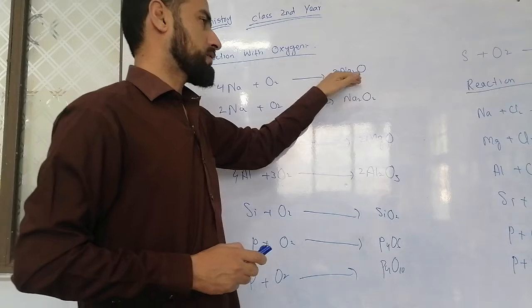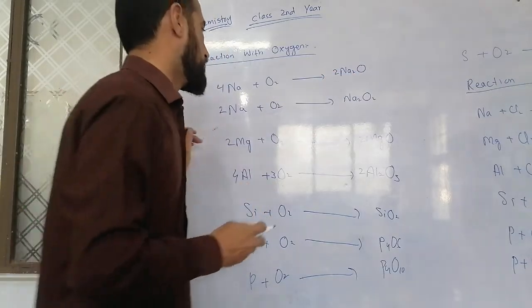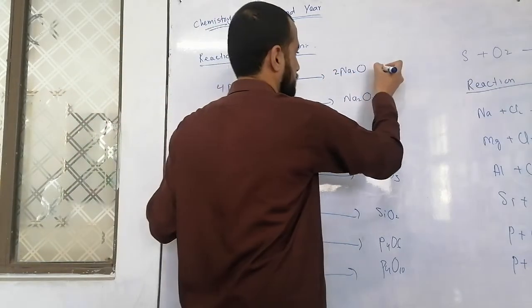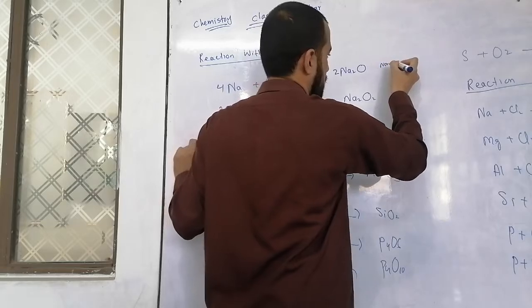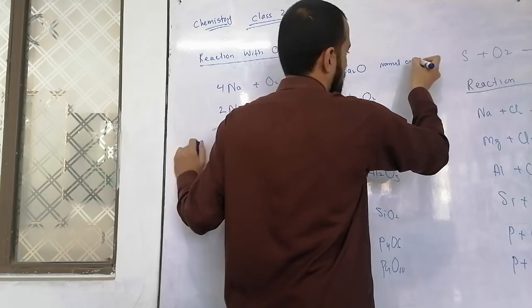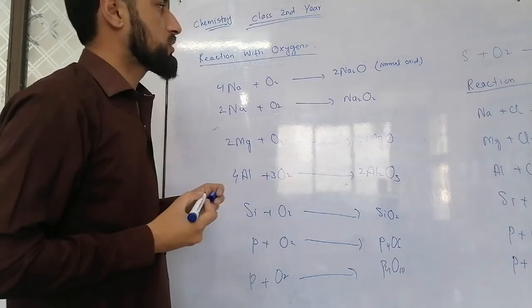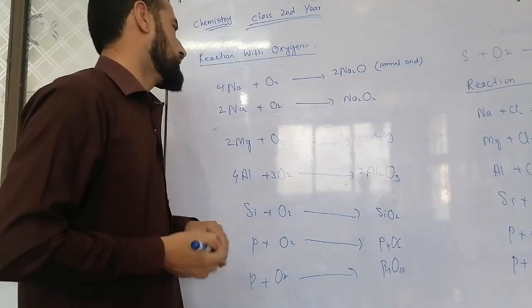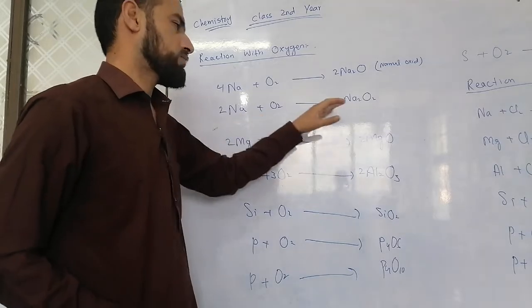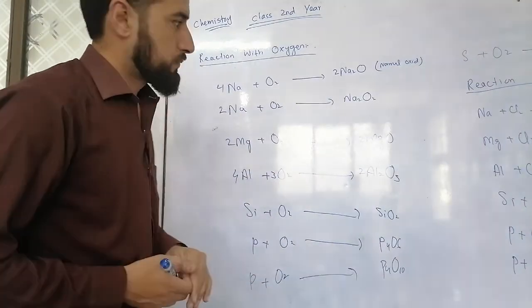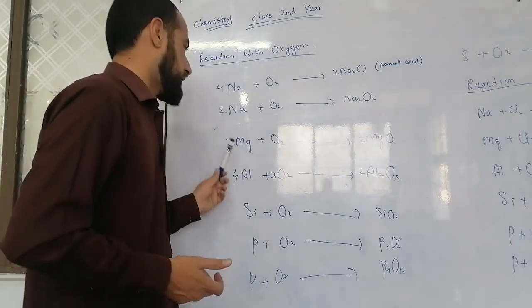This is sodium oxide. This is sodium normal oxide. What is the limited supply of oxygen? This is the sodium peroxide. This is with the supply of oxygen. This is sodium peroxide.